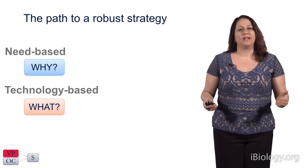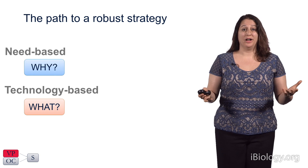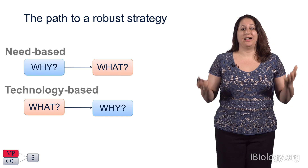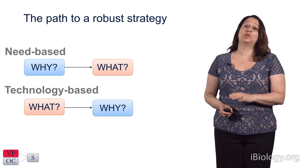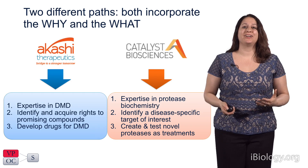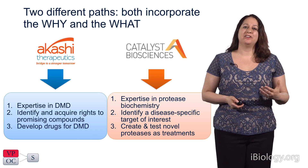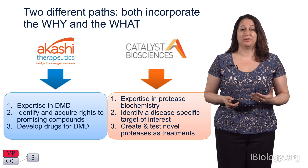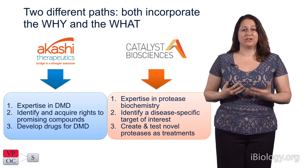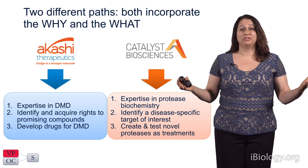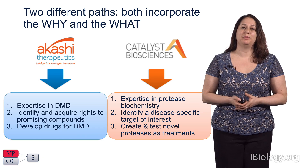We've talked about two different ways to start building a strategy: a need-based strategy, or why, and a technology-based strategy, or what. Whichever way an enterprise starts, they need to ask both questions — a why company needs to get to the what, and a what company needs to get to the why. Akashi, founded to find treatments for Duchenne muscular dystrophy, acquired rights to promising compounds and is now developing them. Catalyst started with a protease engineering platform, reviewed a wide set of disease states, identified the best targets, and is now selecting and developing products.